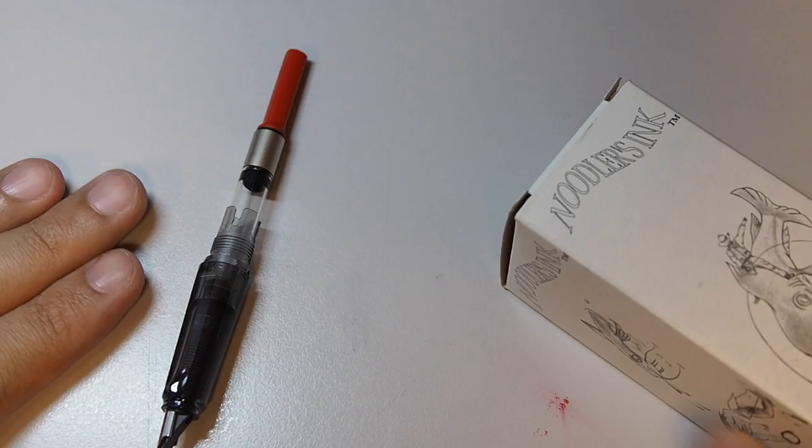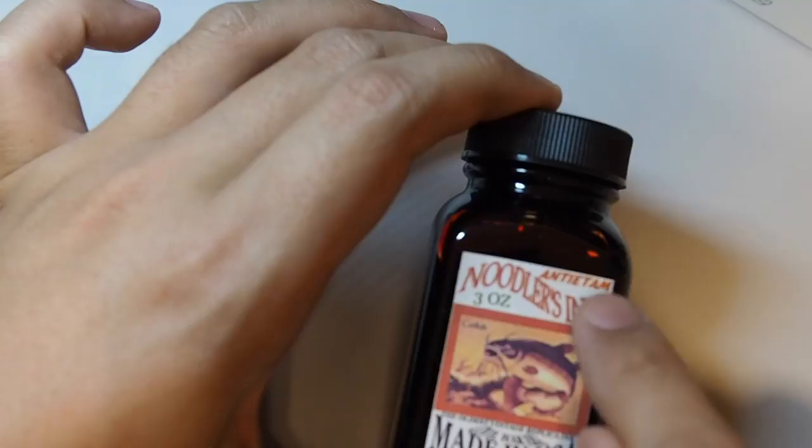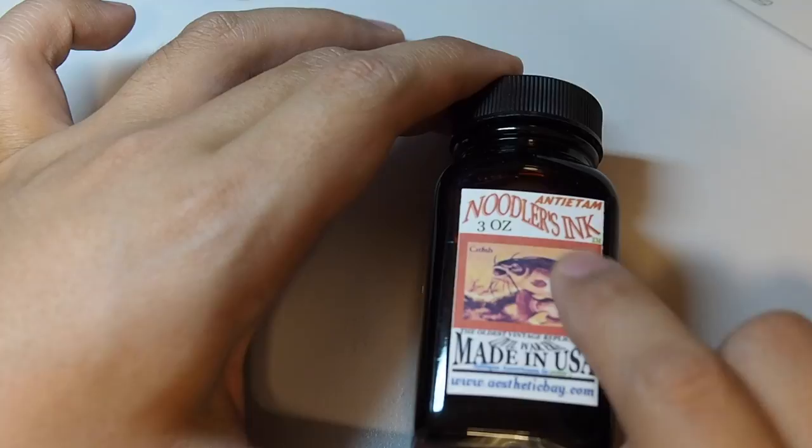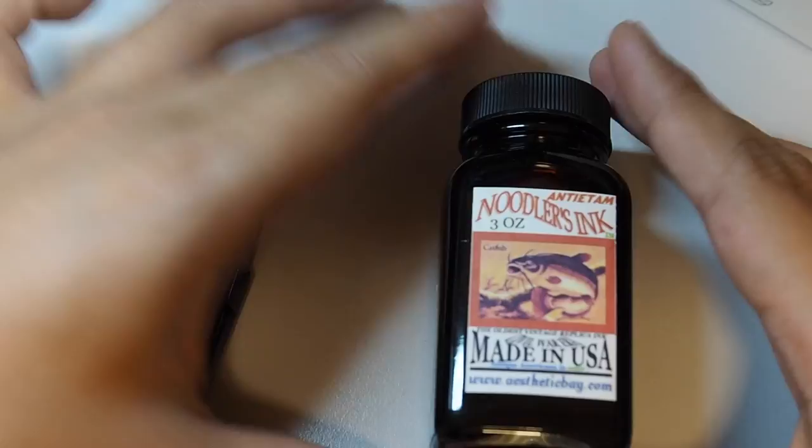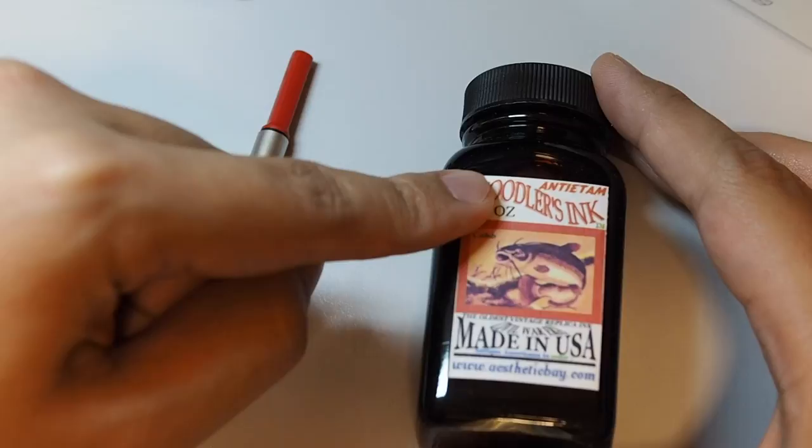So right now, we're going to go ahead and fill the pen with this ink. The ink that I bought is the Noodler's Antietam one. What I actually wanted to get is the Noodler's Ink Apache Sunset, but they don't have it here in the shop. So I got this one which looks quite close enough to the Apache Sunset one.